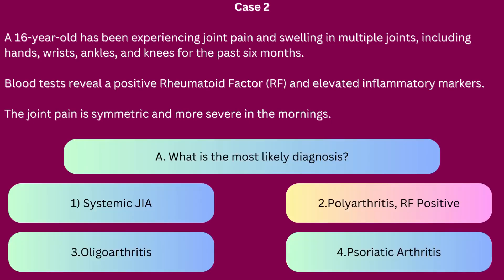The correct answer is 2, polyarthritis rheumatoid factor positive. The presence of arthritis in multiple joints, particularly in the small joints of the hands and feet, along with a positive rheumatoid factor, strongly suggests rheumatoid factor positive polyarthritis juvenile idiopathic arthritis. This type resembles adult rheumatoid arthritis and is marked by significant joint involvement and the potential for joint damage if not adequately treated.